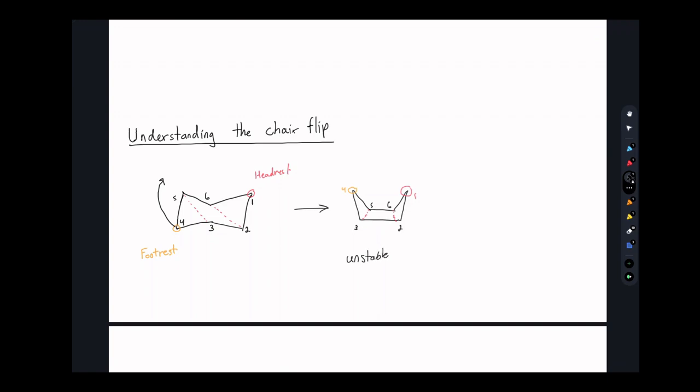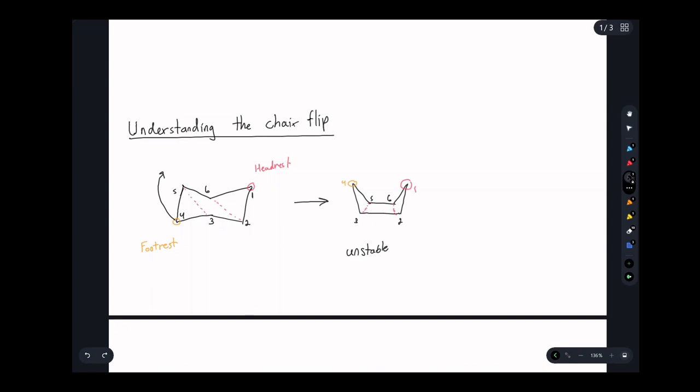So this is an unstable intermediate. Now, the reason it's unstable is actually the torsional strain among this bond. If you have a model kit, you can take a look and see that you're actually going to have eclipsing bonds between five and six and two and three. But for now, we won't go into that much detail. It's unstable, and we like to call it the boat conformation. So this is the boat conformation. We could call this the first chair flip.